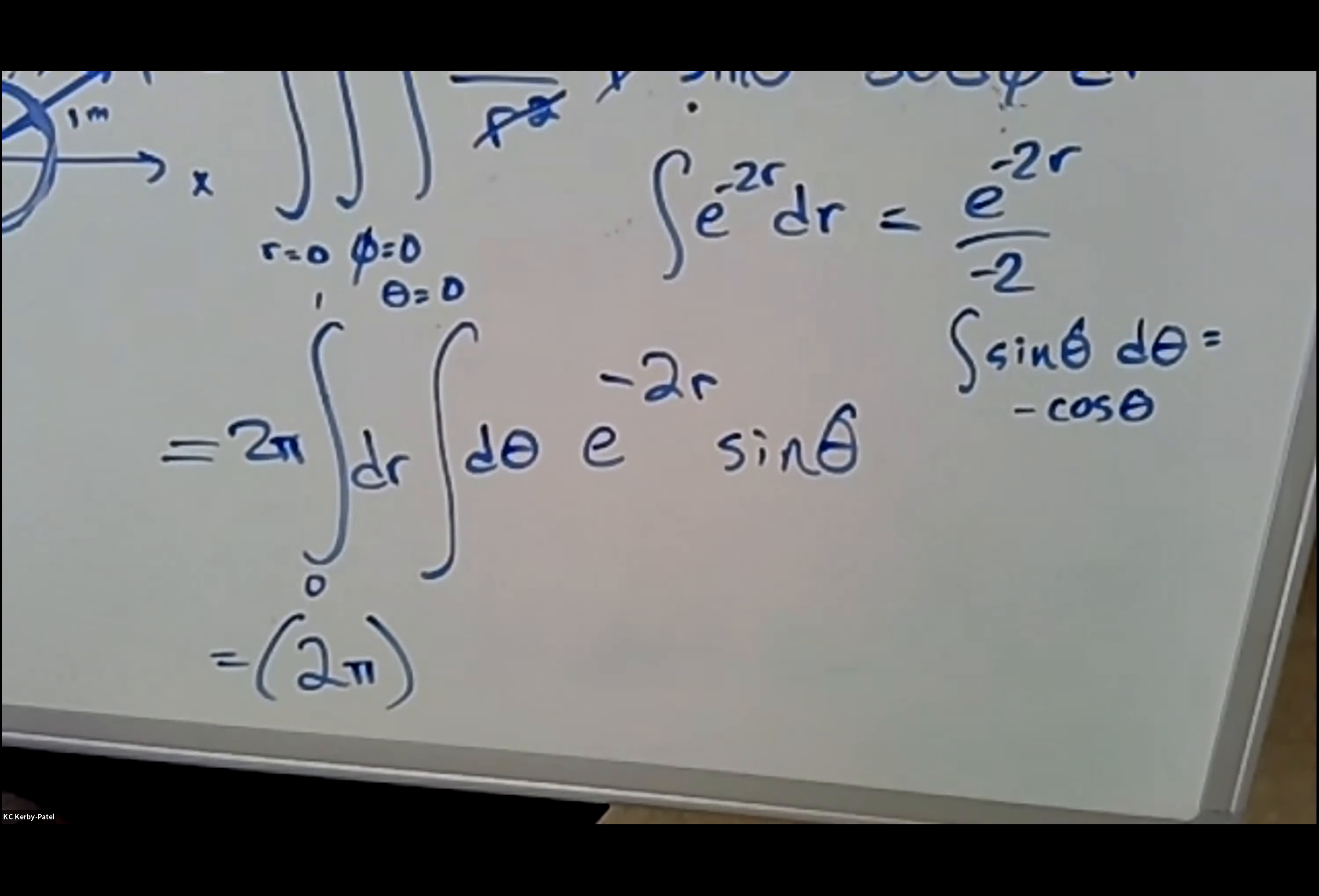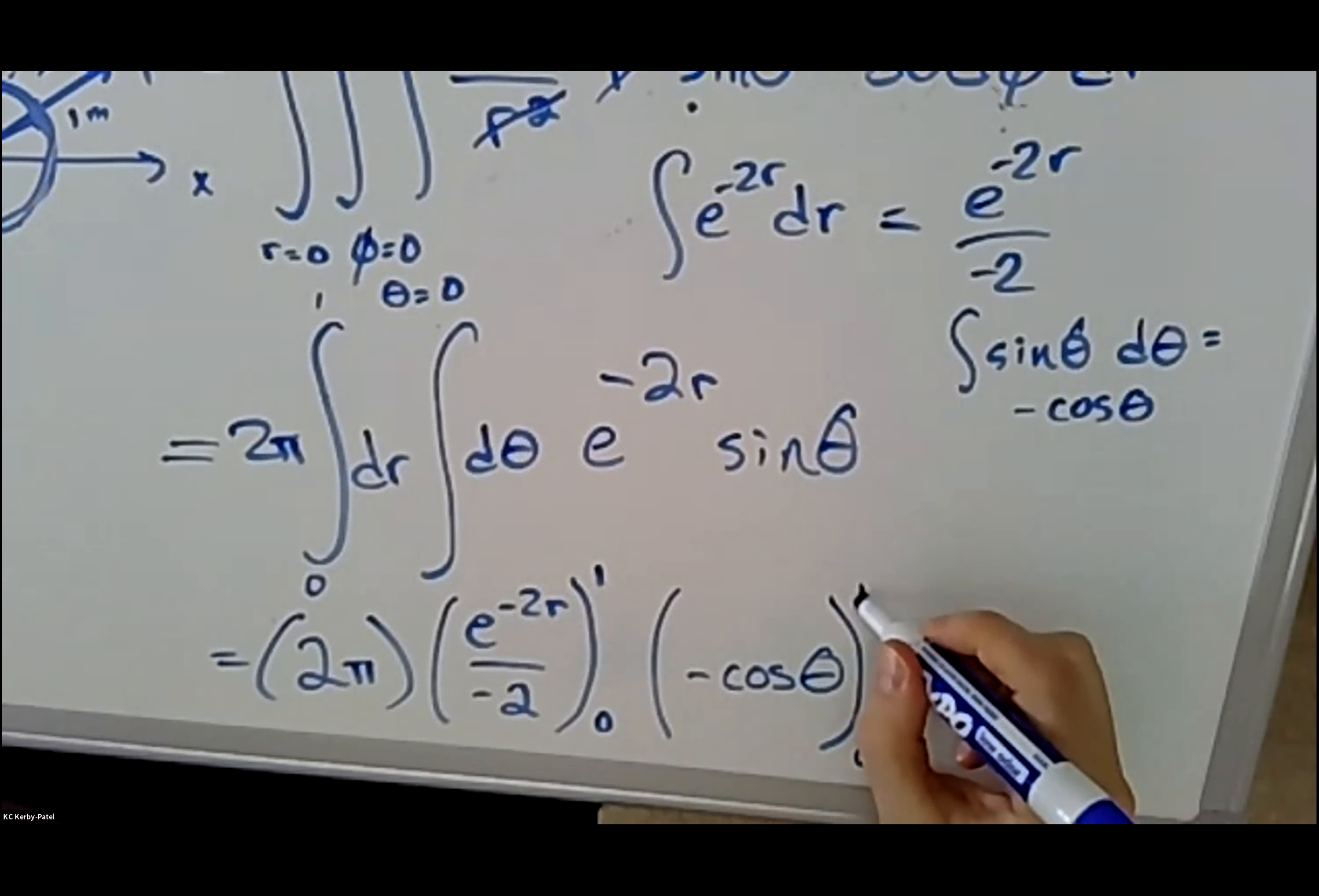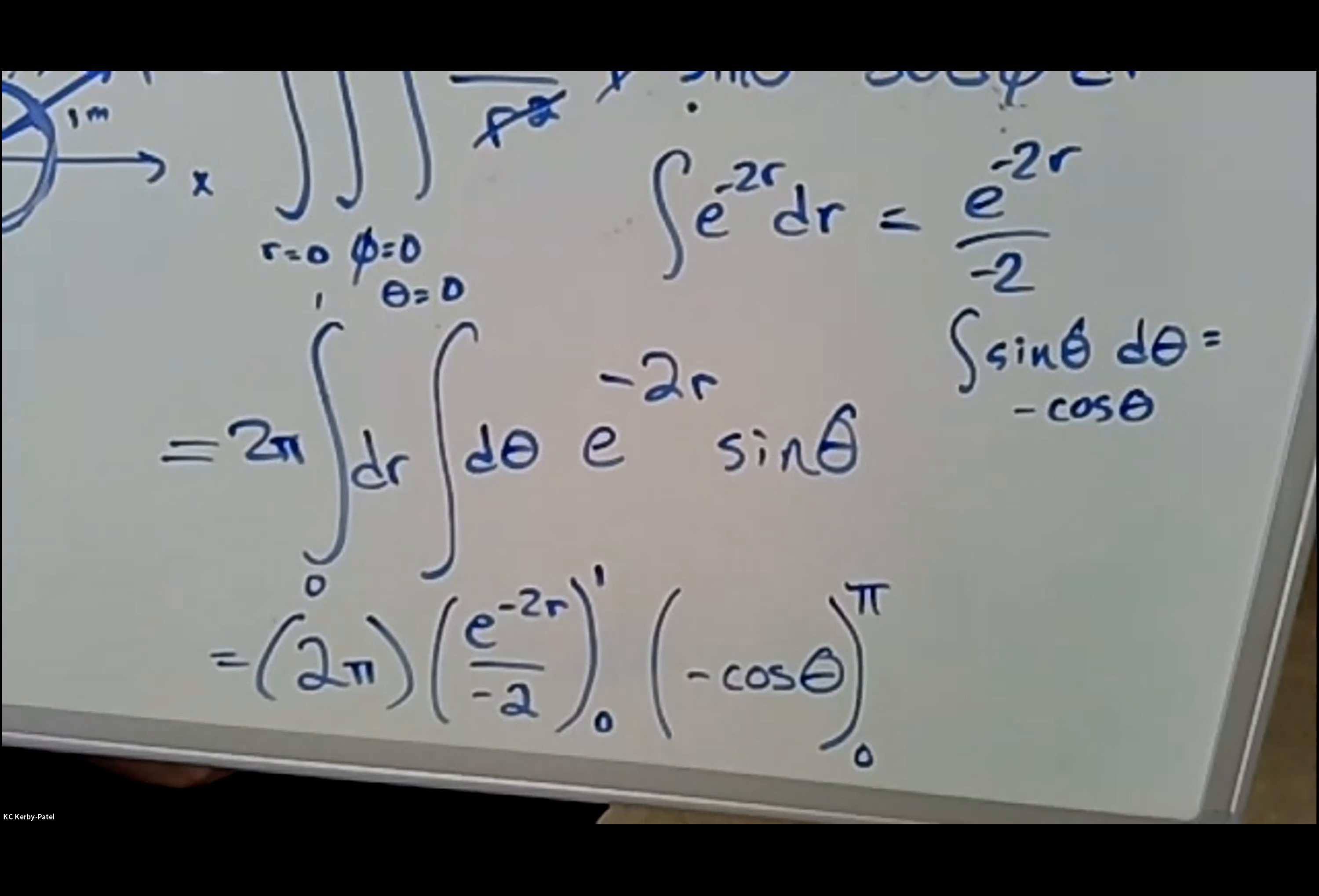So what I end up with is 2π—that's from my phi integral. Next I have e^(-2r) over -2 from my r integral, which gets evaluated from zero to one. And then I have -cos(θ), which also gets evaluated from zero to π.